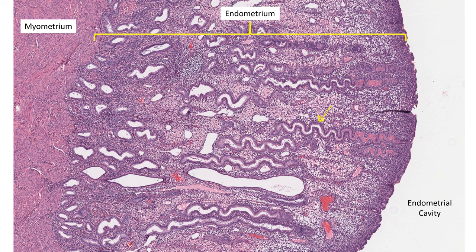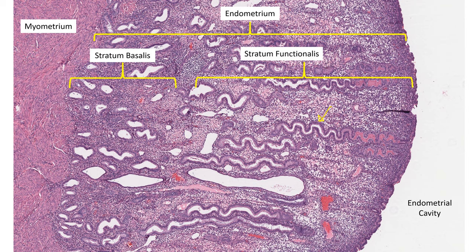The endometrium is also split into functional portions. The stratum basalis is at the base of the endometrium — the area that is minimally responsive to hormonal changes of the menstrual cycle and serves to replenish and regenerate the endometrium at the end of each cycle. The stratum functionalis is the superficial portion. This is the area that responds to hormones, looks different depending on the phase of the cycle, and is shed during menses at the beginning of every cycle and then regenerated.